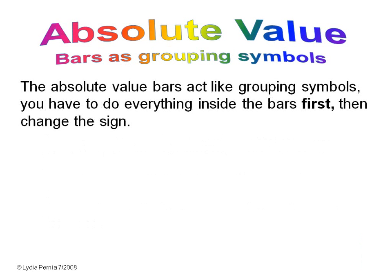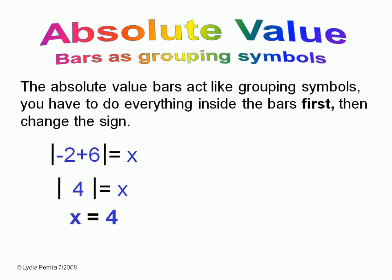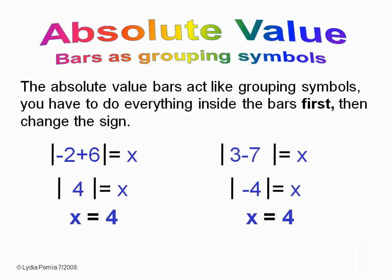Remember that you have to do everything inside the bars first before you make the answer positive. Negative two plus six is four, and the absolute value of four is four. Three minus seven is negative four, and the absolute value of negative four is positive four.